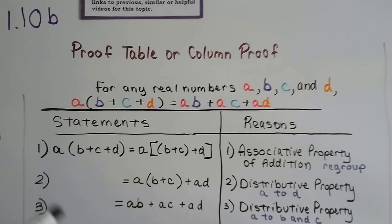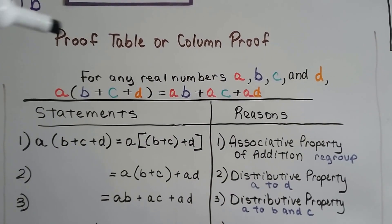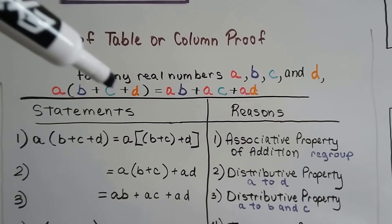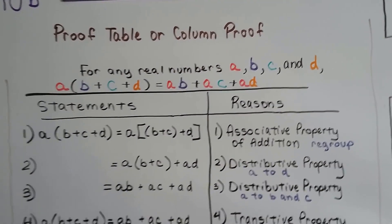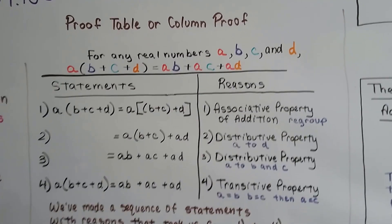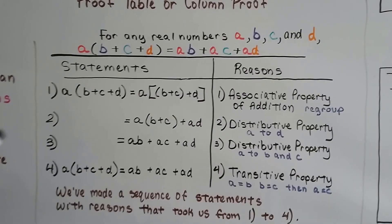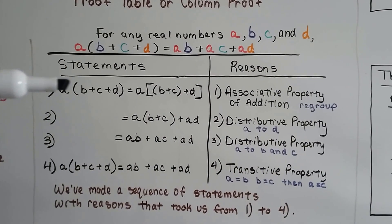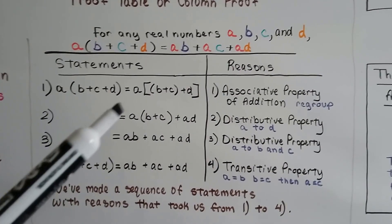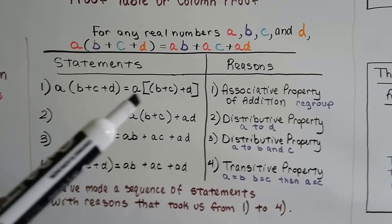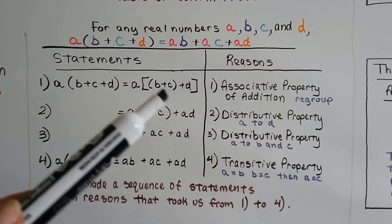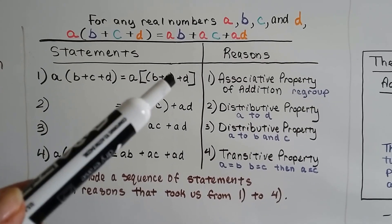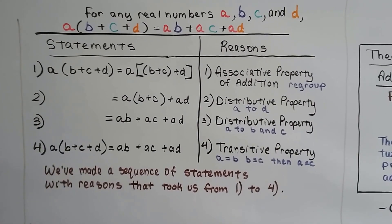For any real numbers a, b, c, and d, that extended distributive property theorem says a times b plus c plus d equals a distributed to each one inside the parentheses as ab plus ac plus ad. We can make the statement that a times (b + c + d) equals a times the quantity (b + c) plus d, by adding b and c and distributing the a into the brackets.